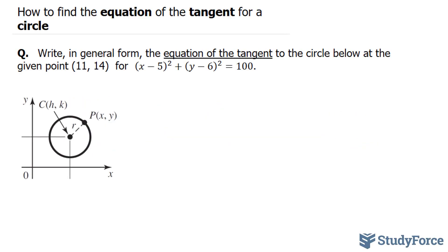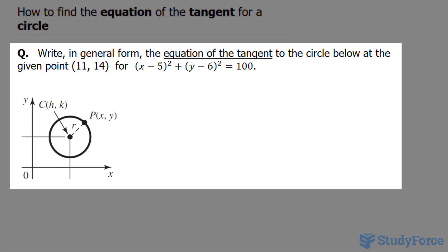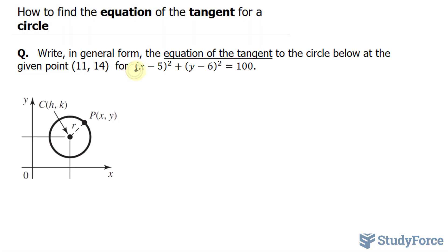In this video, I'll show you how to find the equation of the tangent for a circle. The question reads: write in general form the equation of the tangent to the circle below at the given point 11 and 14, for the equation x minus 5 squared plus y minus 6 squared is equal to 100.